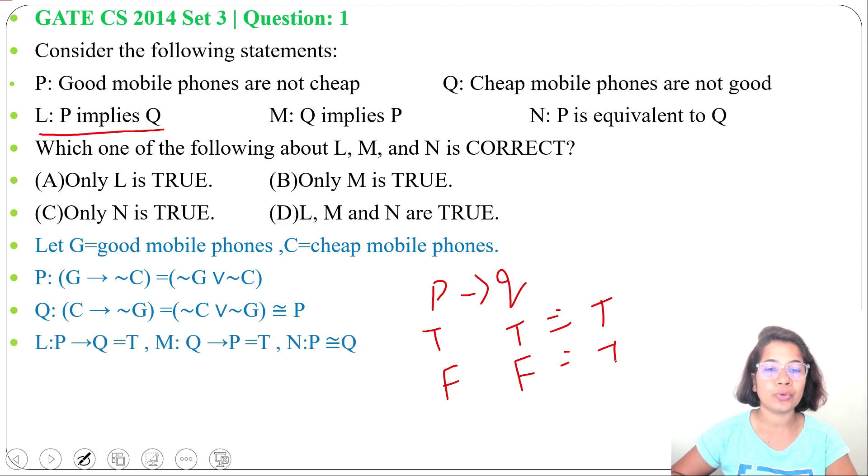Now M: Q implies P. Yes, it's also true as both have same truth value. N is P is equivalent to Q. Yes, we already proved that P is equivalent to Q, so all L, M, and N are true.